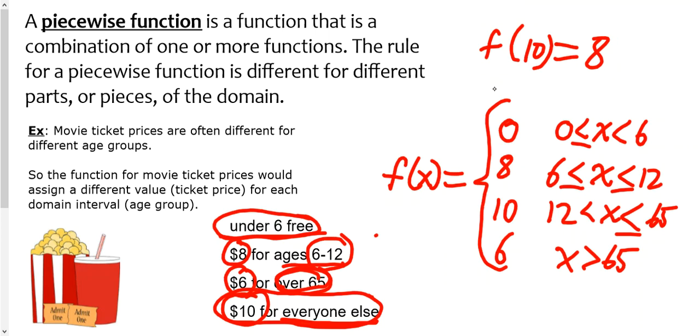If I wanted to evaluate this function for seventy, so a seventy-year-old person, you would look at the domain and see when x is greater than sixty-five, that's me, I'm seventy. My cost is six. And so f of seventy for this function would be six. Because a seventy-year-old person would be paying six dollars.